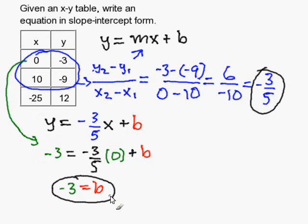Now I have my y intercept and my slope. I have my slope-intercept equation. So my resulting answer is y equals negative 3 over 5x minus 3.